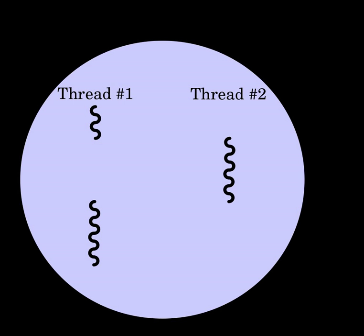Threads in the same process share the same address space. This allows concurrently running code to couple tightly and conveniently exchange data without the overhead or complexity of an IPC. When shared between threads, however, even simple data structures become prone to race conditions if they require more than one CPU instruction to update — two threads may end up attempting to update the data structure at the same time and find it unexpectedly changing. Bugs caused by race conditions can be very difficult to reproduce and isolate.